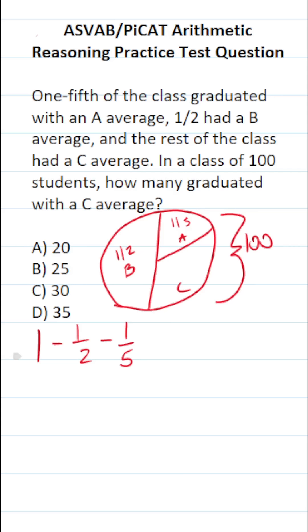In order to subtract fractions, they have to have a common denominator. What is a common denominator between 2 and 5? That's going to be 10.